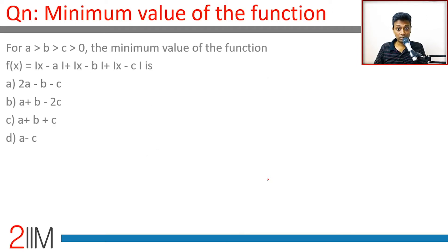For a > b > c > 0, the minimum value of the function |x - a| + |x - b| + |x - c| is... Brilliant question! I'm going to